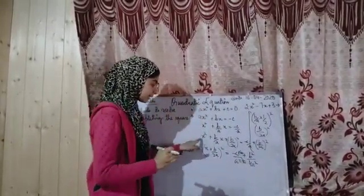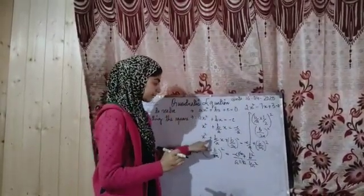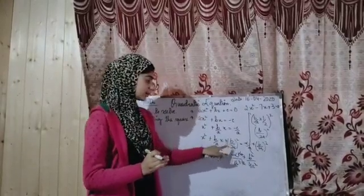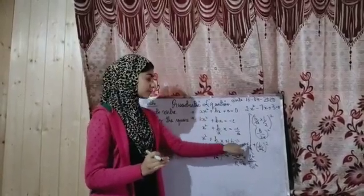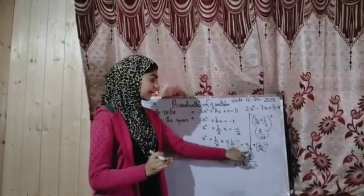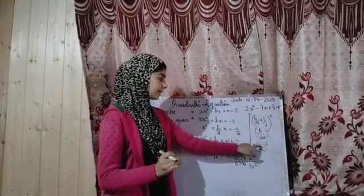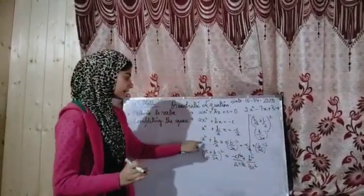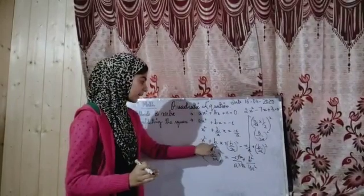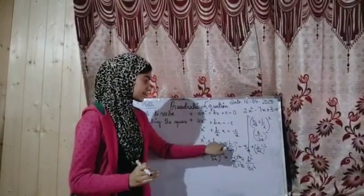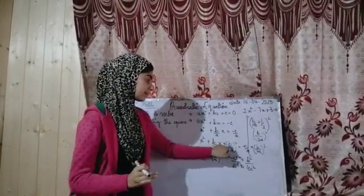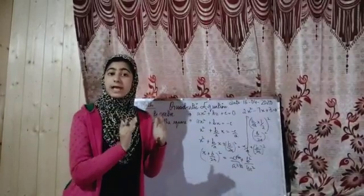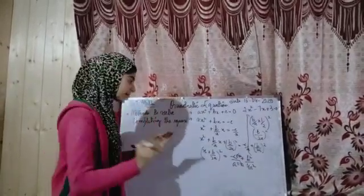After adding, you get x² + (b/a)x + (b/2a)² on the left side, equal to -c/a + (b/2a)² on the right side. The left side now becomes x² + 2ab + b², which matches our first identity: (a + b)².